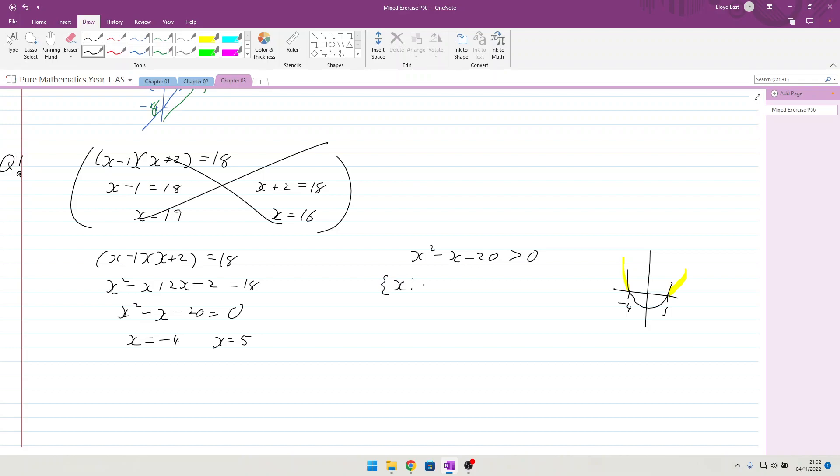So x is less than minus 4 in union with the set of x which is greater than 5. That's part b. Be careful of the trap that I fell into at the beginning, thinking it can be solved just like that.